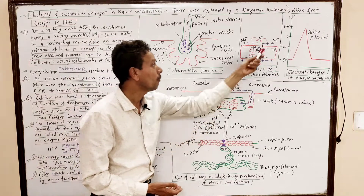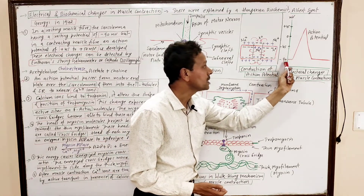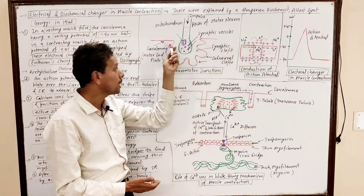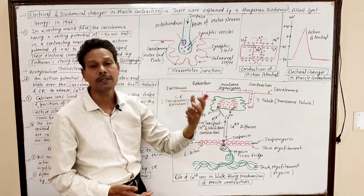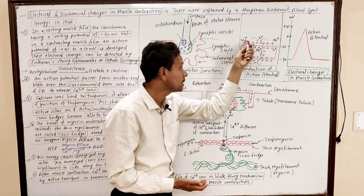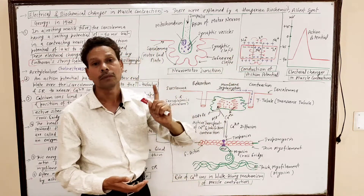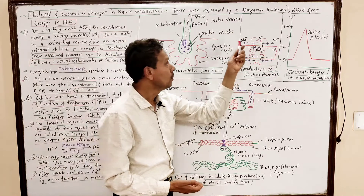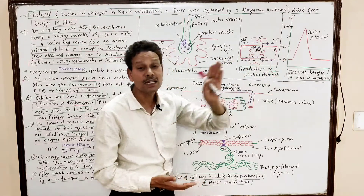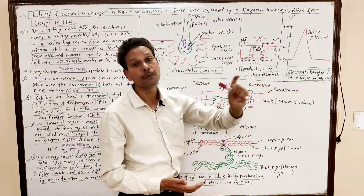On this sarcolemma, a potential gradient is present. In the resting state, the resting potential is negative 90 millivolts. This ionic gradient is maintained by the sodium-potassium active pump. In normal resting conditions, there is a higher concentration of sodium ions outside and a higher concentration of potassium ions inside. The resting potential is minus 90 millivolts.